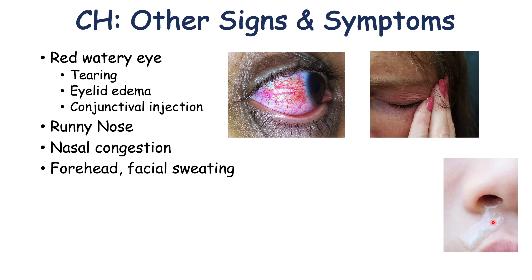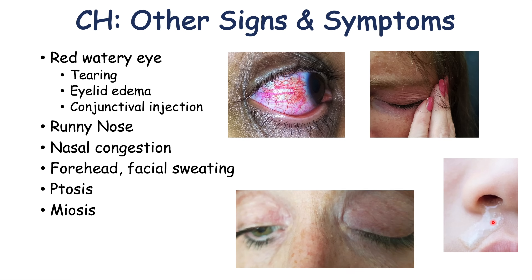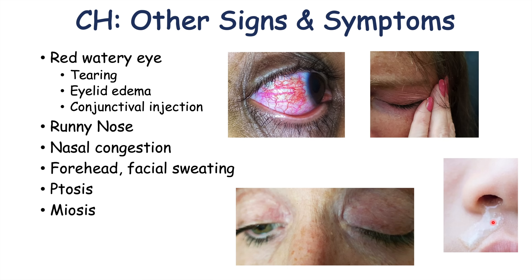Additional specific findings include ptosis, which is a drooping eyelid, and miosis, which is a constricted pupil. These are all more specific findings characteristic of cluster headaches.